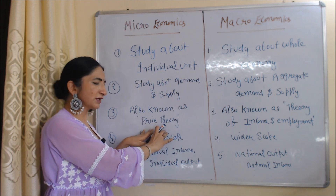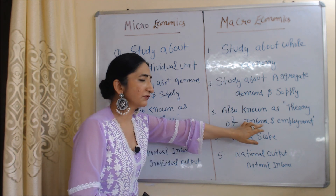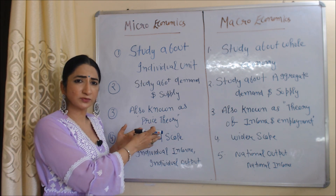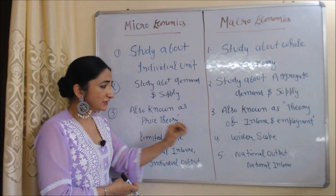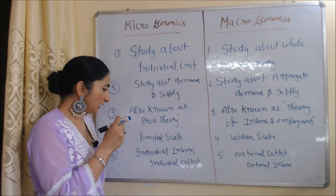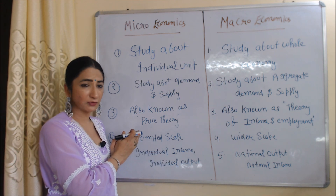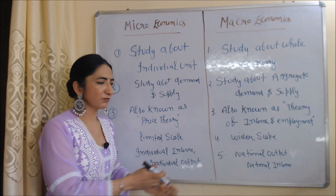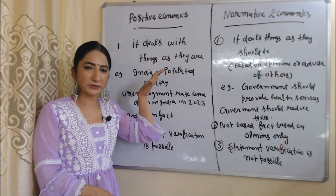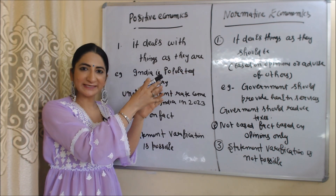Microeconomics is also known as price theory, while macroeconomics is also known as the theory of income and employment. Microeconomics has a limited scope because it is a small part of the economy, whereas macroeconomics has a wider scope as it covers the large part of the economy. Examples of microeconomics include individual income and individual output; examples of macroeconomics include national output and national income.